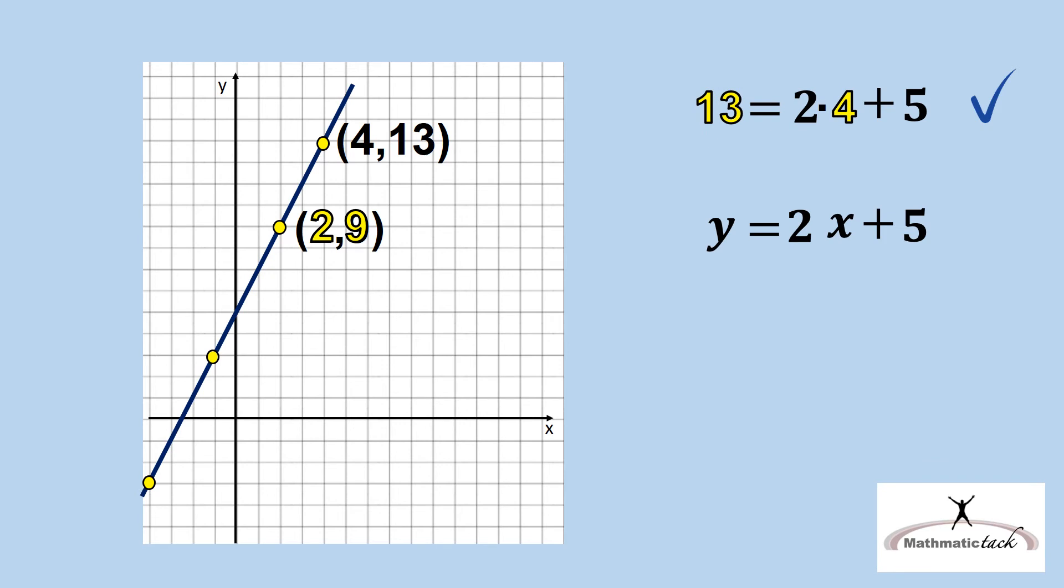The point (2, 9) is also on this line. Let's input 9 for y and 2 for x. If we work out the equation, 2 times 2 plus 5 does equal 9. So the equation is correct.